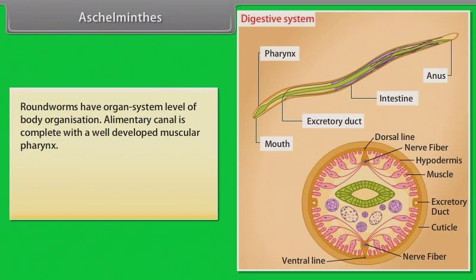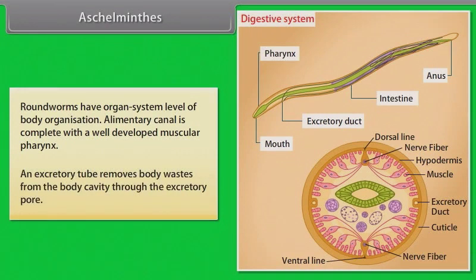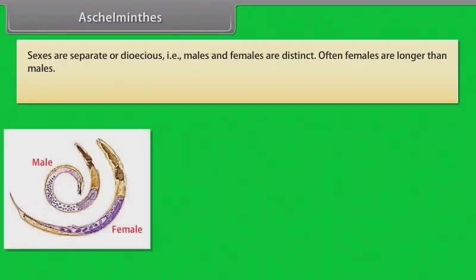The alimentary canal is complete with a well-developed muscular pharynx. An excretory tube removes body waste from the body cavity through the excretory pore. Sexes are separate, that is dioecious — males and females are distinct. Often females are longer than males.